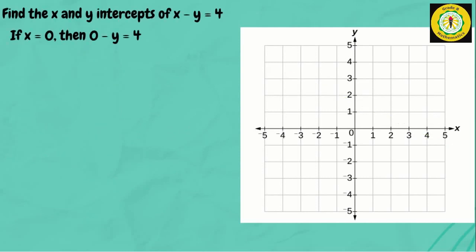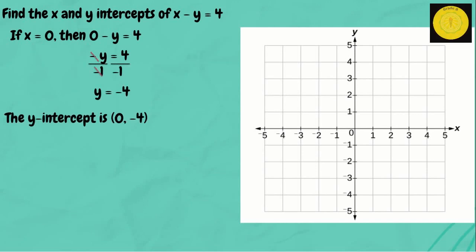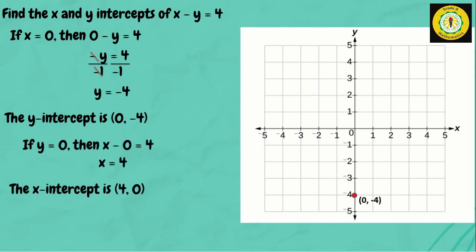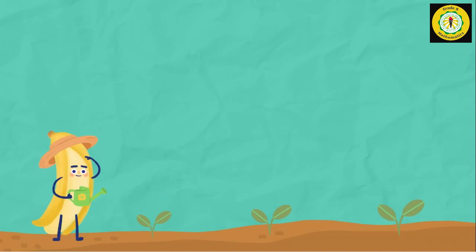Third example: find the x and y-intercept of x minus y equals 4. If x equals 0, then 0 minus y equals 4, so negative y equals 4. Dividing both sides by negative 1, y equals negative 4. The y-intercept is (0, negative 4). If y equals 0, then x minus 0 equals 4, so x equals 4. The x-intercept is (4, 0). Now we plot both intercepts and connect with a straight line.